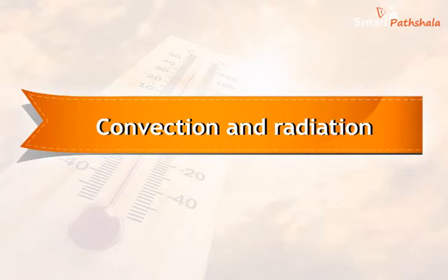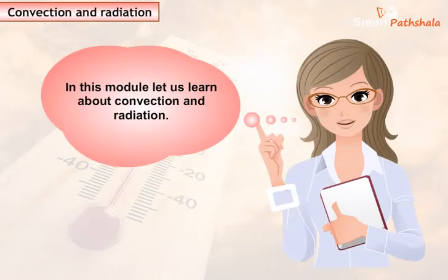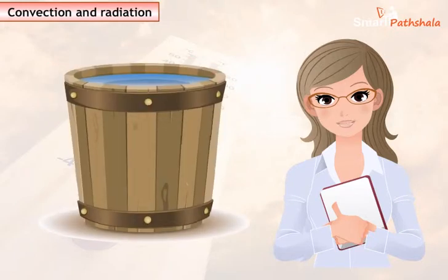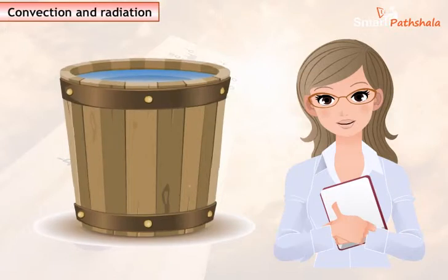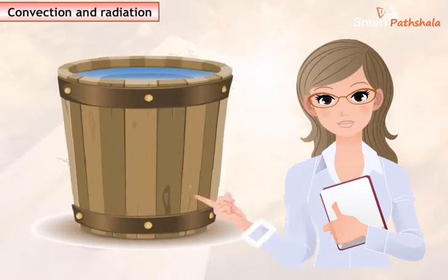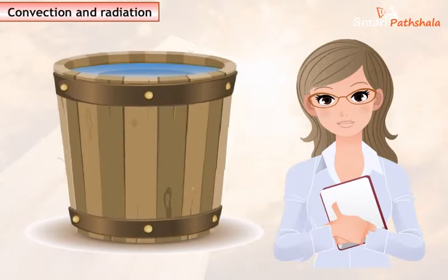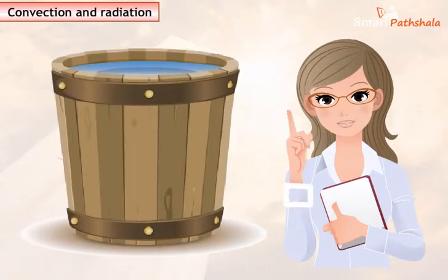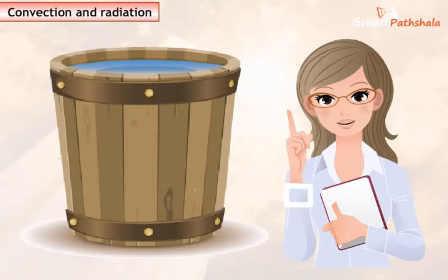Convection and Radiation. In this module, let us learn about convection and radiation. Water and air are poor conductors of heat, yet heat transfer takes place in these substances. Let us learn how heat transfer takes place in these substances. First, let us perform an activity to understand heat transfer in water.